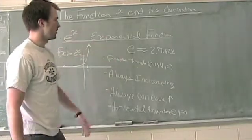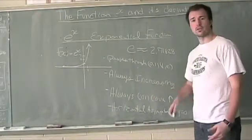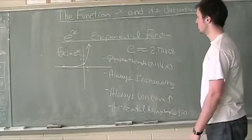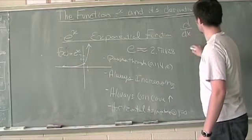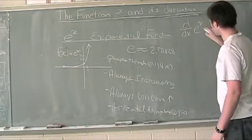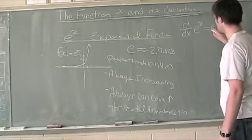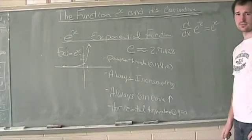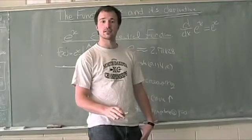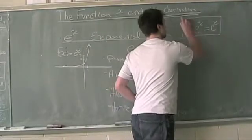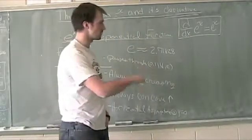So that covers the basic things about the exponential function. E to the x is also a one-to-one function, and we'll be studying its inverse more in just a little bit. When we're looking at the derivative, the derivative with respect to x of the function e to the x is — and this is important — it's simply e to the x. The derivative of e to the x is e to the x, and that's the most important thing to remember right now.